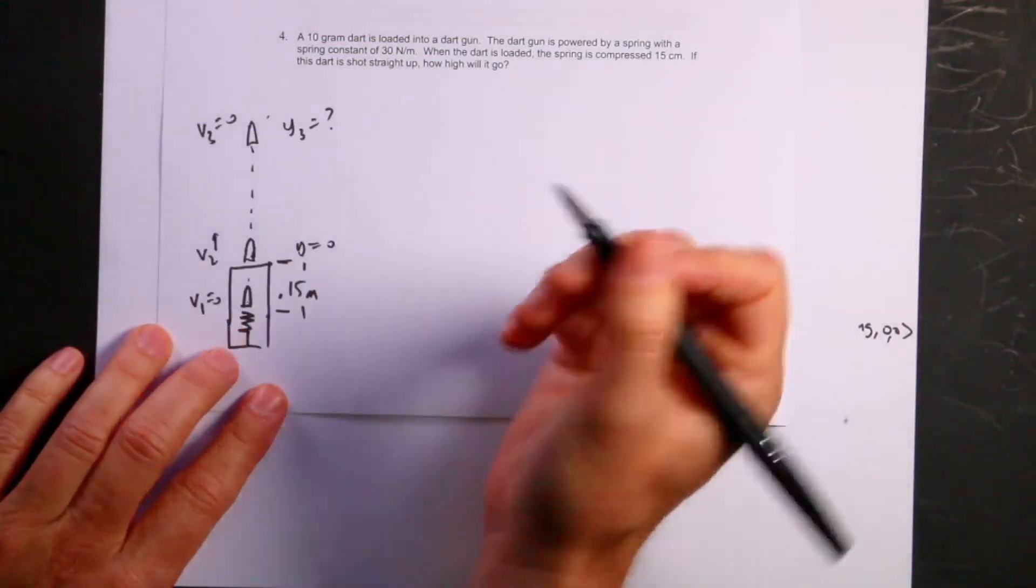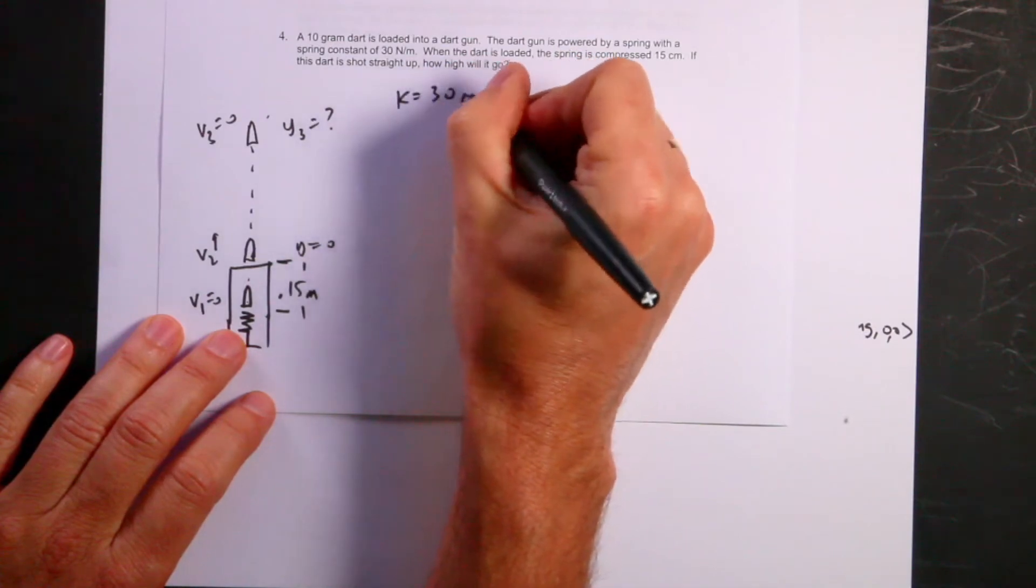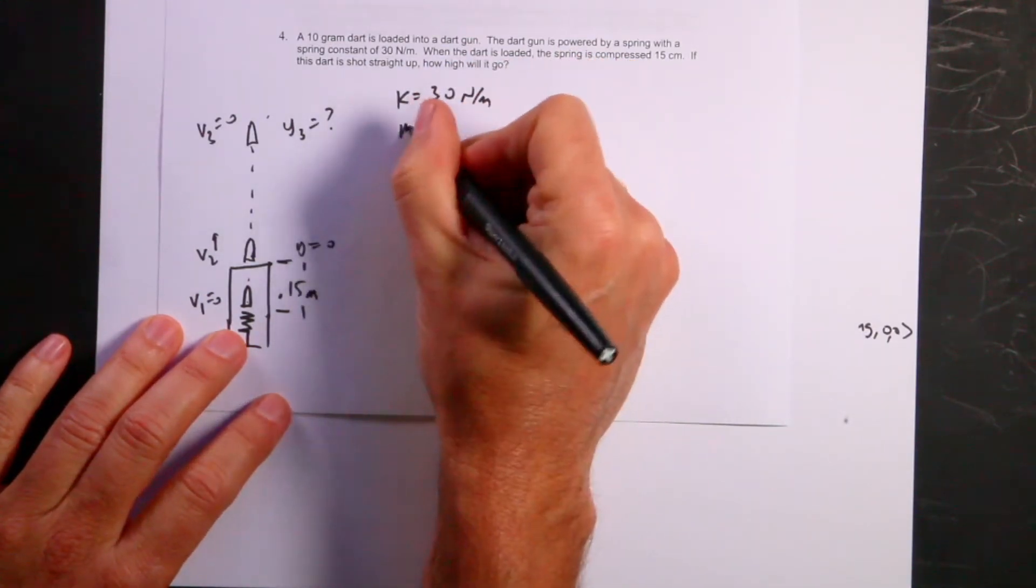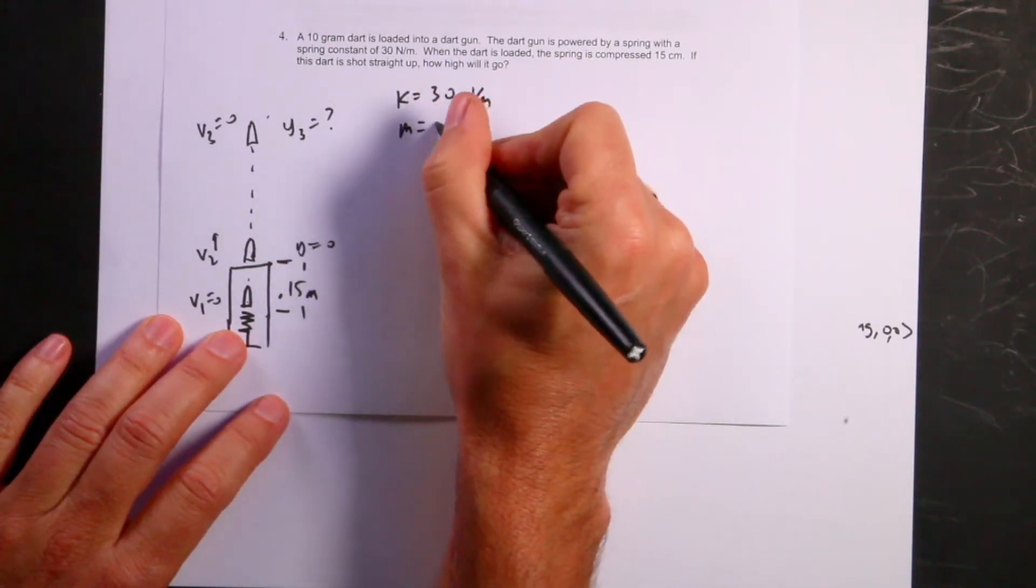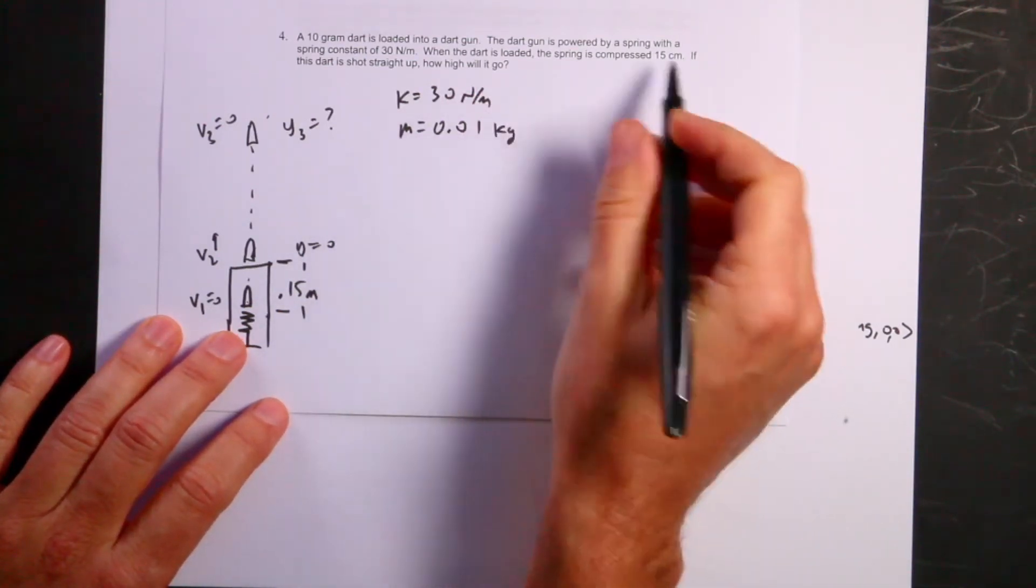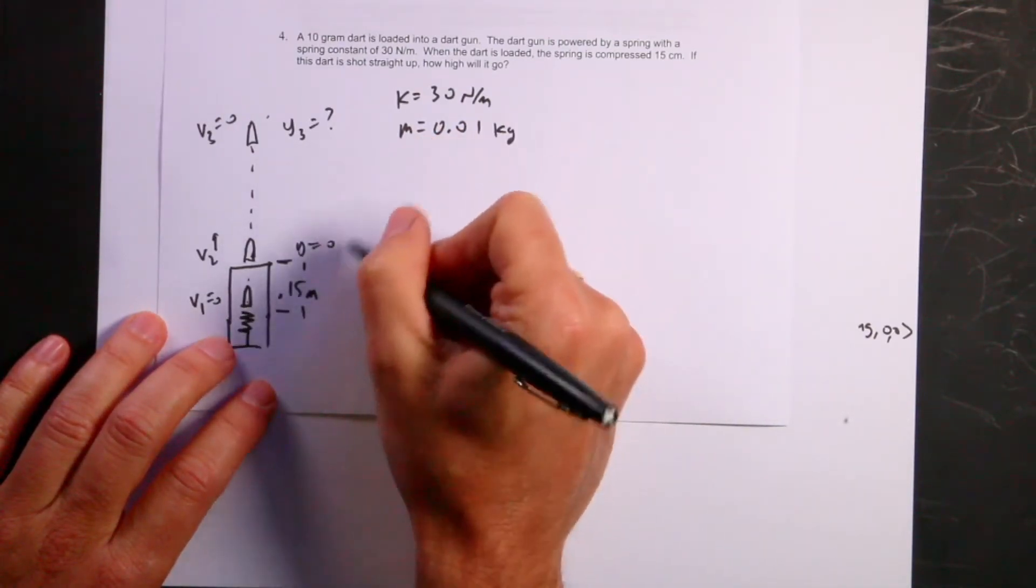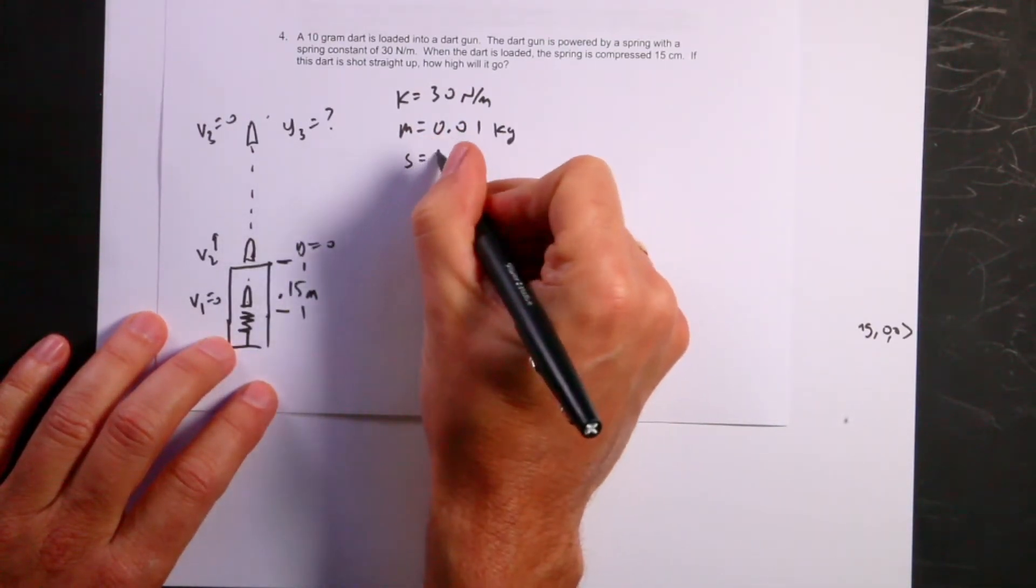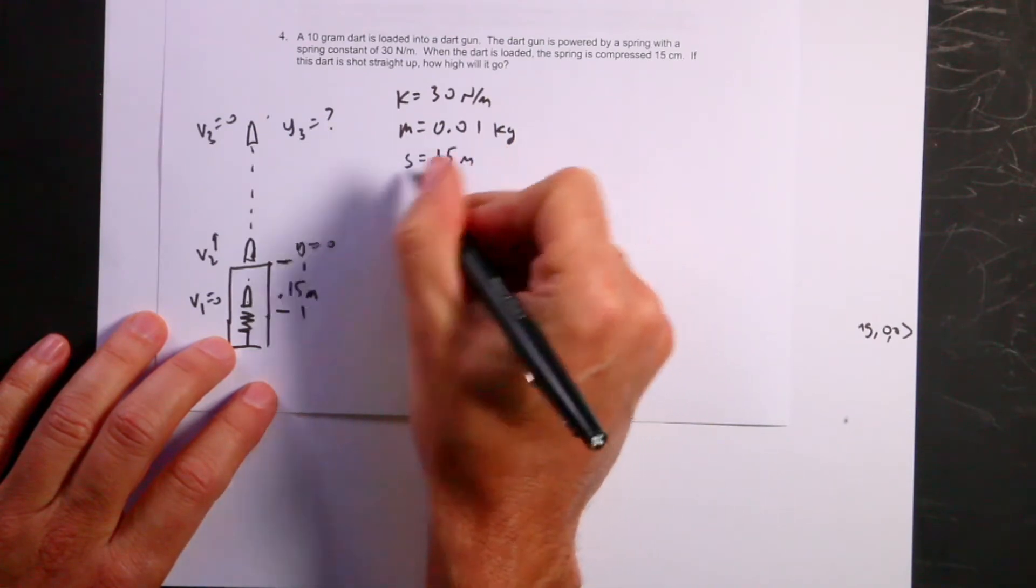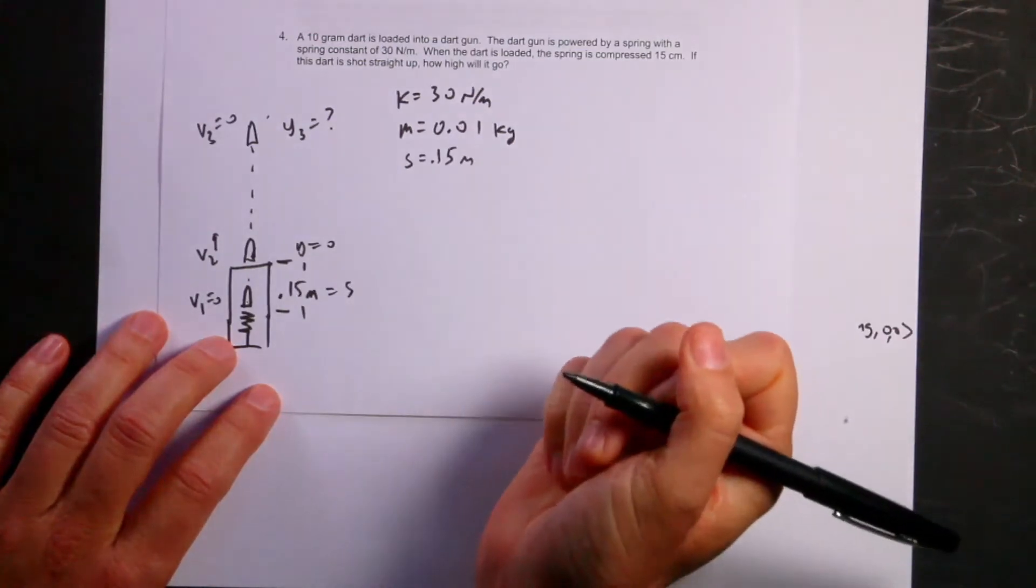Spring constant K is 30 newtons per meter. Mass is 10 grams, so 0.01 kilograms. And then we'll call this S equals 0.15 meters, the distance it's compressed.